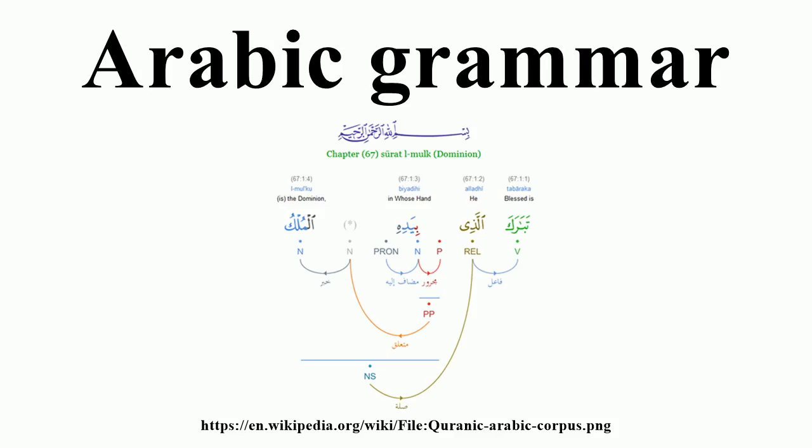The largest differences between the two systems are the loss of grammatical case, the loss of the previous system of grammatical mood, along with the evolution of a new system, the loss of the inflected passive voice, except in a few relic varieties, and restriction in the use of the dual number.